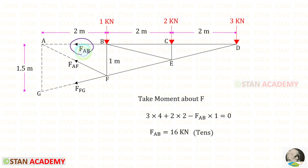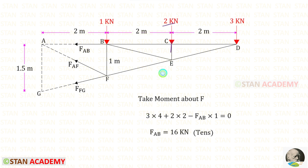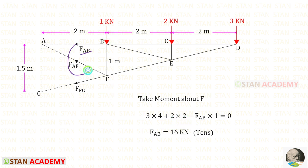To find FAB, we take moments about F because it is easy. When we take moments about F, we do not consider FAF or FFG. The remaining forces are FAB, 2 kN, and 3 kN. The 3 kN force acts in the clockwise direction, so it is positive, and the distance is 4 — giving 3 × 4. The 2 kN load also acts clockwise, so it is positive, with a distance of 2. FAB acts in the anti-clockwise direction, so it is negative, with a distance of 1. Solving gives a positive value for FAB, meaning it is tensile.